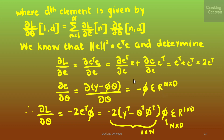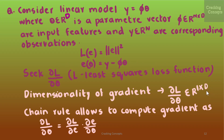Therefore, ∂l/∂θ = (2eᵀ)(−Φ) = −2eᵀΦ. Substituting for eᵀ = (y − Φθ)ᵀ = yᵀ − θᵀΦᵀ, we obtain −2(yᵀ − θᵀΦᵀ)Φ. Here the first term has dimension 1×n and Φ belongs to ℝⁿˣᵈ, so the entire result belongs to ℝ¹ˣᵈ as defined at the beginning.